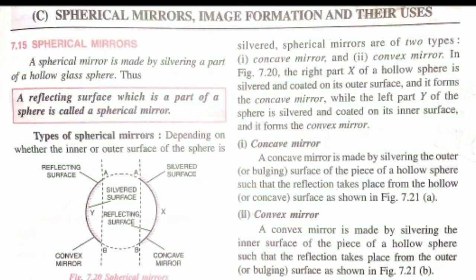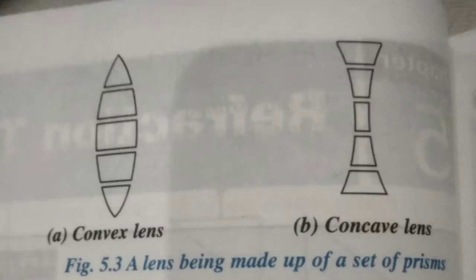First thing first — what is a spherical mirror? The reflecting surface which is a part of a sphere is called a spherical mirror. It has the property to reflect a ray of light. That part of a sphere is called a spherical mirror. A spherical mirror is of two types: concave and convex mirror.